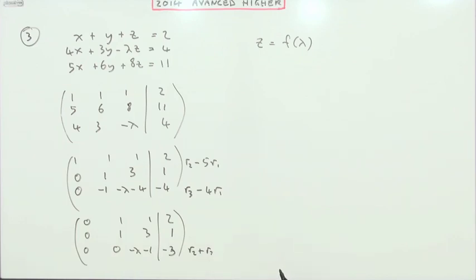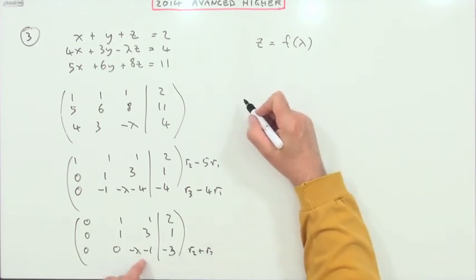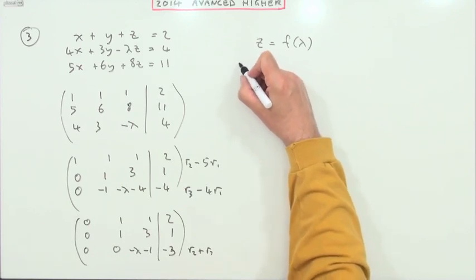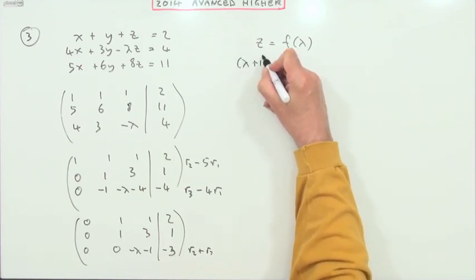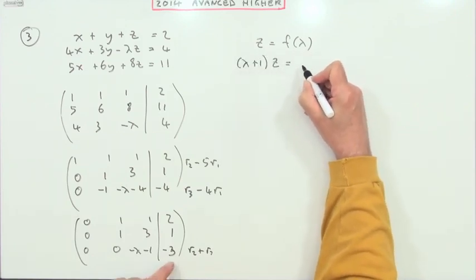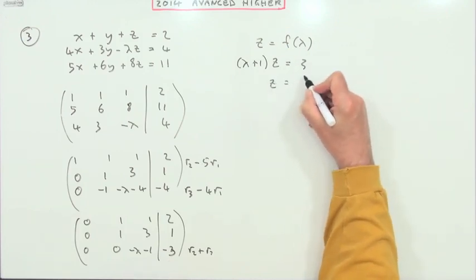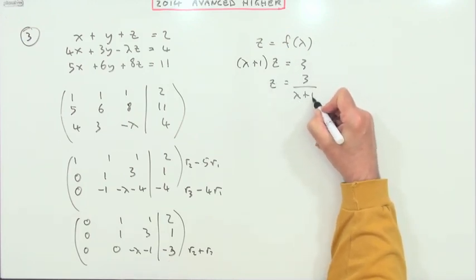I could rearrange that again and just make more positives. So that means, just knocking all the negatives out, that lambda plus one lots of z equals three. So z will be three over lambda plus one.